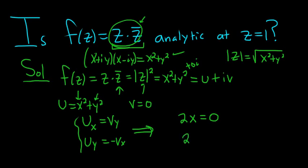U sub y is 2y. And negative v sub x, that's just going to be 0 again. So in particular, at z equals 1. Now keep in mind, what is z equals 1? That means you have x plus iy equals 1. So what does that mean? That means that x is 1 and y is 0.